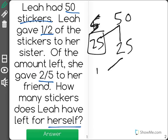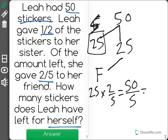She gave two-fifths to her friend, so what we have here is we have 25 times two-fifths, which is 50 over 5 or 10.